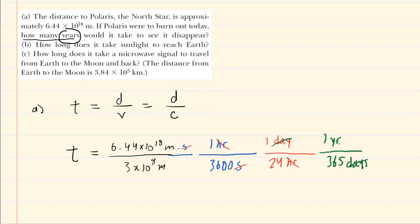The days would cancel out, leaving us with the answer in years. You'll punch this very carefully into your calculator, and when you do so, you should get about 681 years. This would be the correct answer to part A of the question.